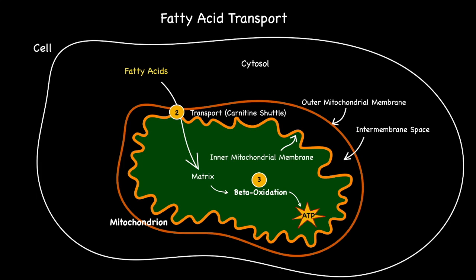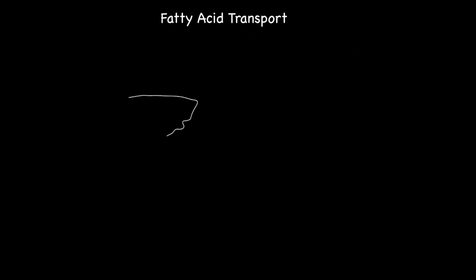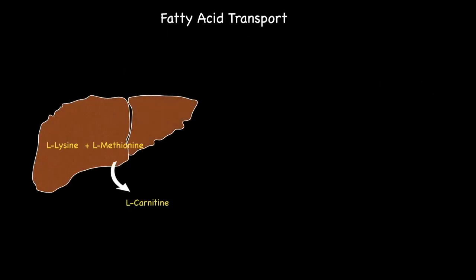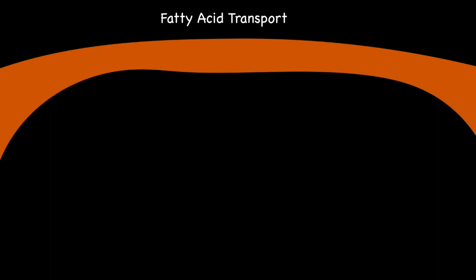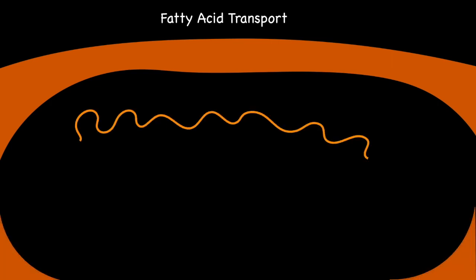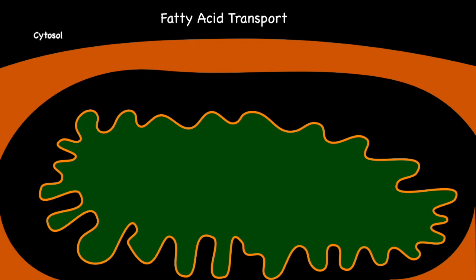Central to this transport system is the dipeptide known as L-carnitine, which is produced in the liver by combining the two essential amino acids L-lysine with L-methionine. L-carnitine also comes from the food you consume and more specifically from red meat. The carnitine shuttle is divided into two main steps which I am about to explain. Before I do so, let's further enlarge the mitochondrion so that we can see how these steps unfold in greater detail.